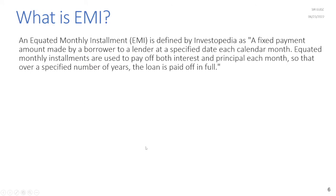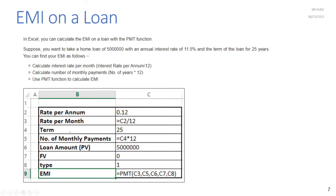An Equated Monthly Installment (EMI) is defined as a fixed payment amount made by a borrower to a lender at a specified date each calendar month. EMIs are used to pay off both interest and principal each month so that over a specified number of years the loan is paid off in full. In Excel you can calculate EMI using the PMT (payment) function.